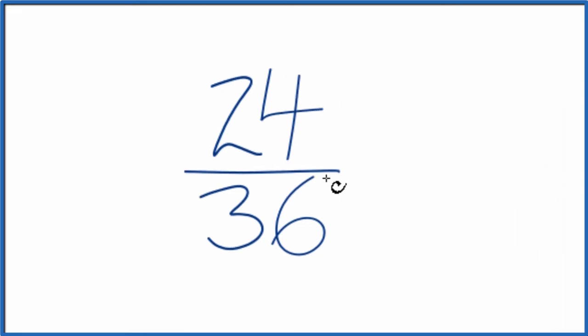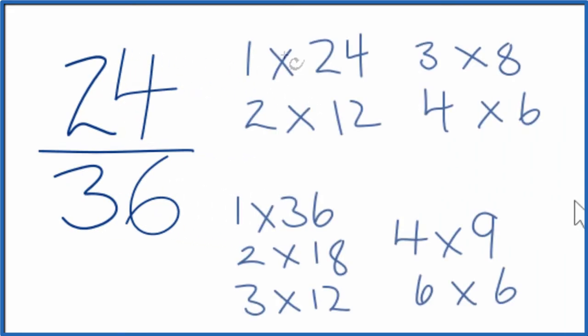So these are the factors of 24 and 36. We're looking for the greatest common factor. And that appears to be, looks like 12. So 12 is the greatest common factor.